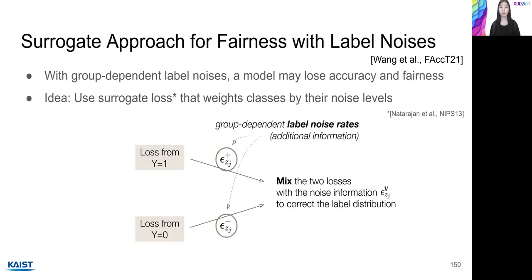Another paper also observes that group-dependent label noises may reduce both model accuracy and fairness. To address this issue, this paper suggests surrogate losses, where the goal is to correct the label distribution by mixing the class-wise losses. The surrogate losses utilize the noise rates of the groups to mix the losses from y=1 and y=0. By this mixing, the surrogate losses can estimate the true loss values, and so the proposed approach mitigates the negative impacts of group-dependent label noises on accuracy and fairness.